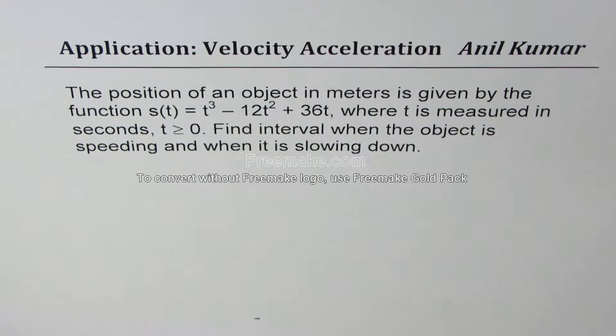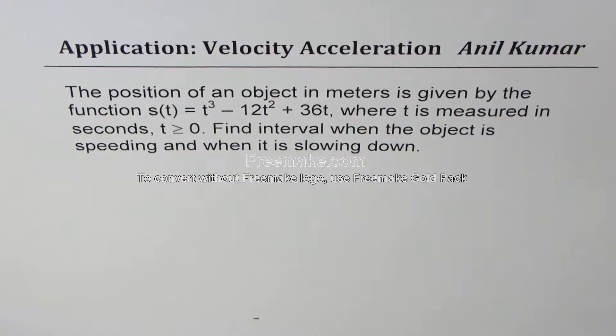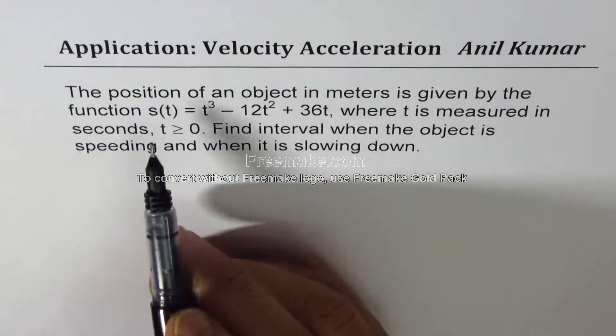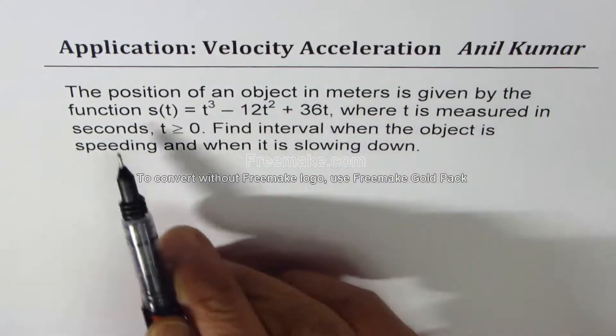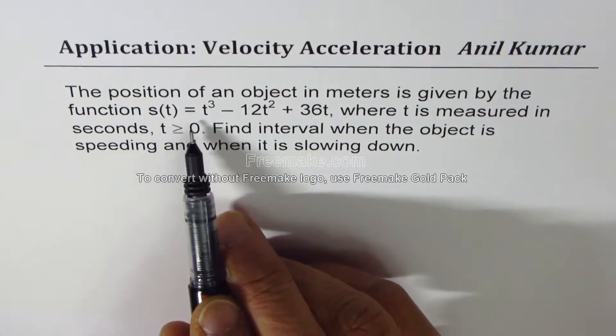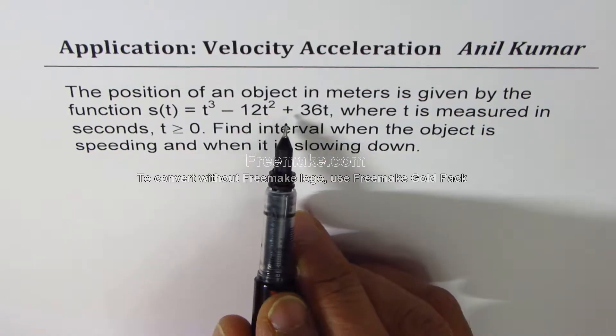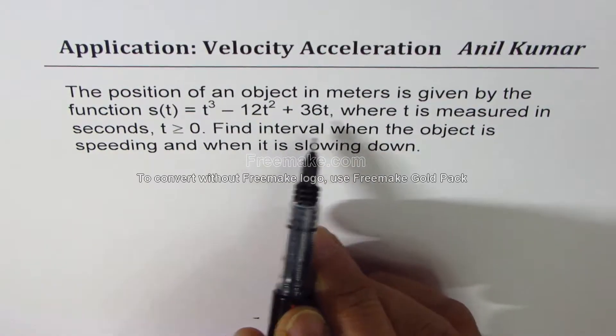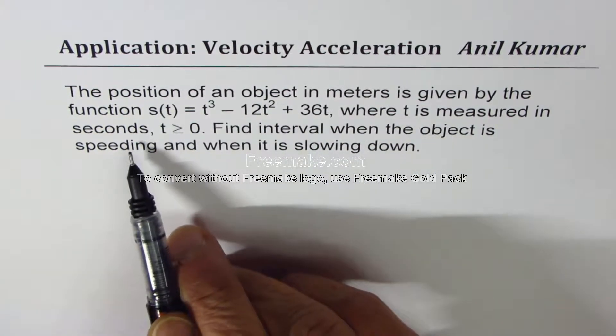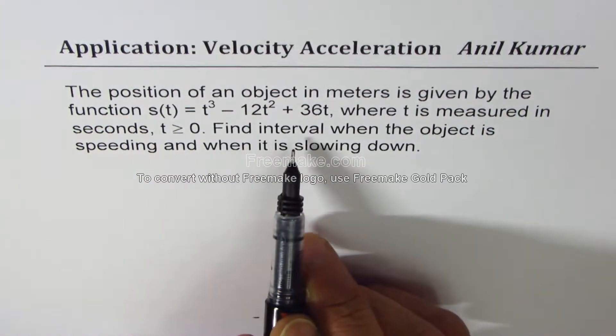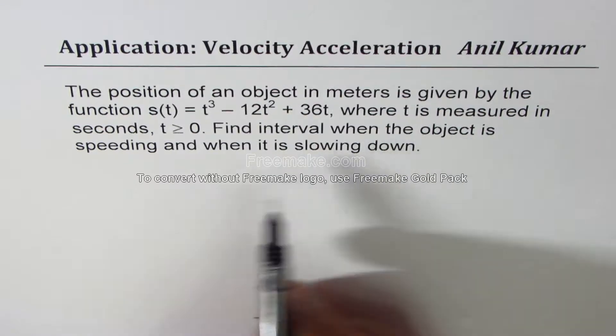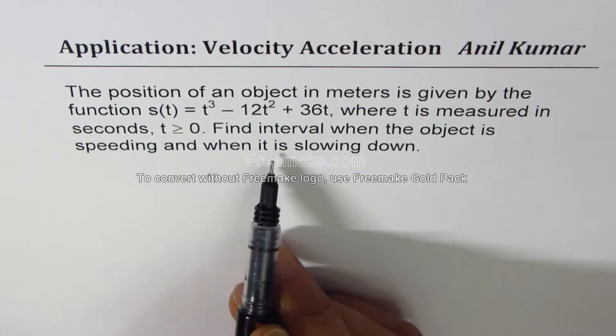I am Anil Kumar and in this example, we will learn the concept of slowing down and speeding up. The equation here is the position of an object in meters is given by the function s(t) = t³ - 12t² + 36t, where t is measured in seconds, t ≥ 0. Find interval when the object is speeding and when it is slowing down.